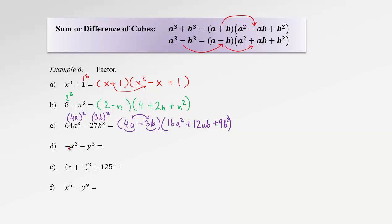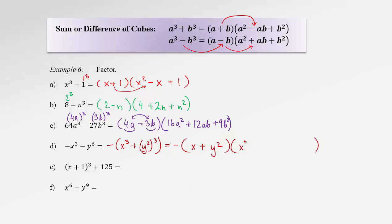In the next example, first pull the minus out of the bracket. Then recognize x cubed plus (y squared) cubed as a sum of two cubes. Keep the minus, then apply the sum of cubes formula. Short bracket: x plus y squared. Long bracket: x squared, switch the sign to minus, product x times y squared is xy squared, then add square of y squared which is y to the 4. Result: negative (x plus y squared)(x squared minus xy squared plus y to the 4).